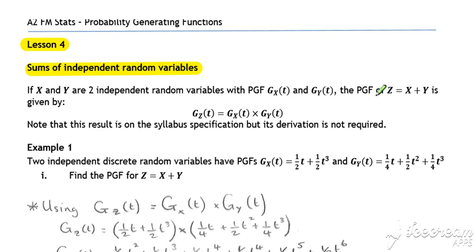This time we have a quotable result that if we have the sum of two independent random variables and we've got the probability generating function for each, then the overall probability generating function of those two independent random variables combined, added together, will be the probability generating function of the first one multiplied by the probability generating function of the second one.